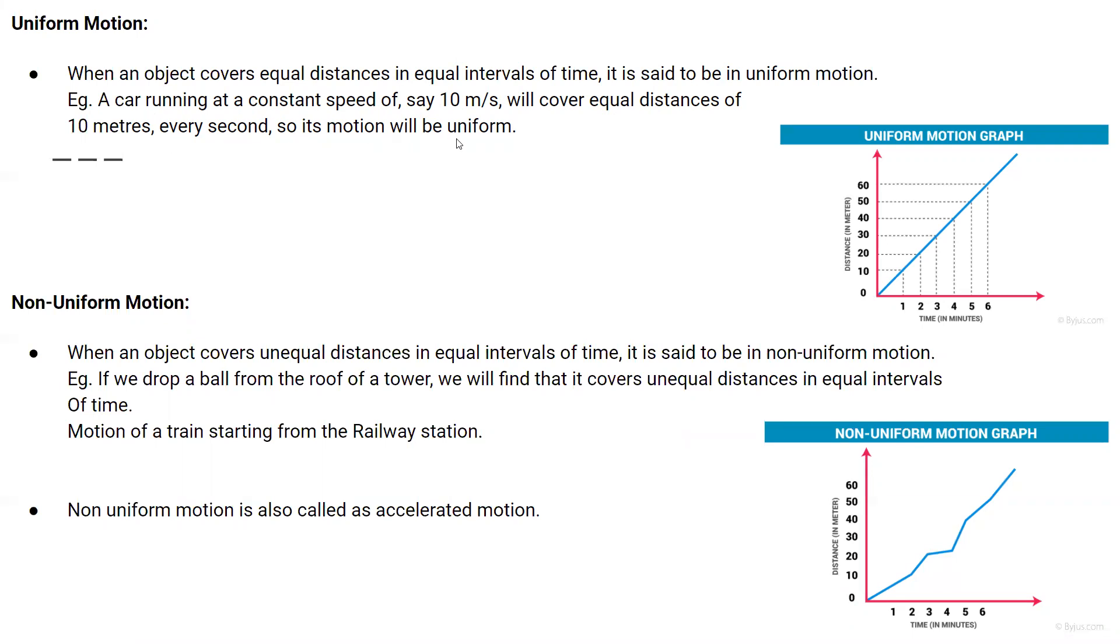Simple is that if we go on a highway, there is no traffic on the highway, and every second the car covers 10 meters distance. It means the time period is constant and distance is constant, meaning the motion is said to be uniform motion.